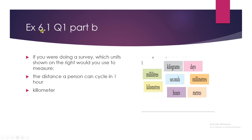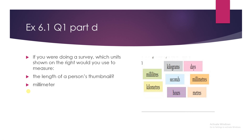Question 1 part B is: the distance a person can cycle in one hour. For a one-hour distance we would measure in kilometers. Part C is the length of time a person sleeps at night, which is in hours and some minutes, so we will mention hours here. The last part D is the length of a person's thumbnail — you can measure the length of your thumbnail in millimeters, so we will measure it in millimeters.